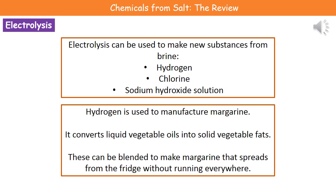We're going to use that hydrogen to manufacture things like margarine, because what it actually does is convert liquid vegetable oils into solid vegetable fats. When we blend that, we end up with margarine that we can spread from the fridge — rather than a fat that just pours onto the bread and slops around. It's not very appealing.